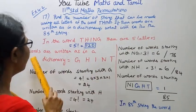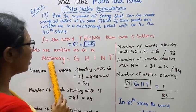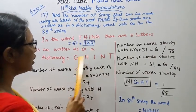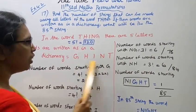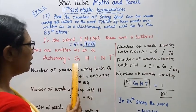Second, words are written as in a dictionary. Dictionary means G, H, I, N, T. What are the letters of the word THING? Repeat after the word THING.